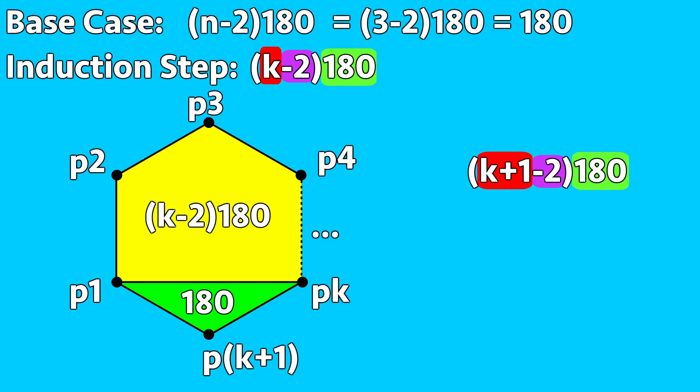We have proven by induction that the interior angles of a polygon equals (n-2) times 180 degrees.